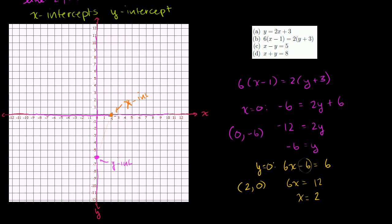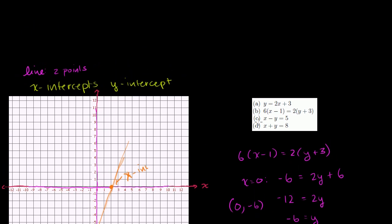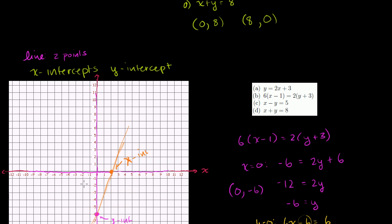Connecting those two points gives us our line for Part B. Now let's do Part D: x + y = 8. This is very straightforward. When x = 0, y = 8 — that's our y-intercept at (0, 8). When y = 0, x = 8 — that's our x-intercept at (8, 0). Connect those dots and you have the line.